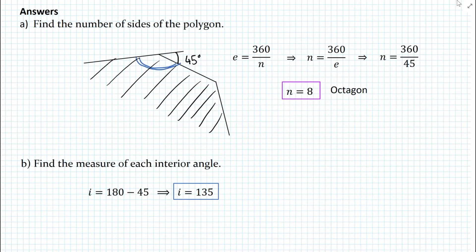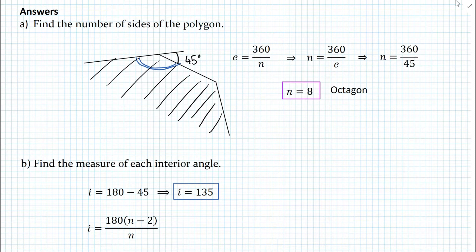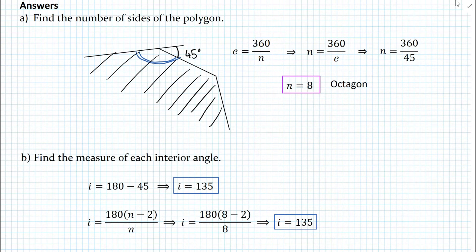The measure of each interior angle is 135 degrees. We could also use a different formula: the measure of each interior angle is 180 times (N minus 2) divided by N. Substituting 8 for N gives us the same answer — 135 degrees for each interior angle.